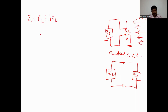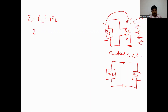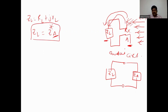According to the maximum power transfer theorem, the maximum power will be transferred from the antenna to the load when the load impedance is the complex conjugate of the antenna impedance. So the condition for maximum power transfer is: load impedance ZL equals the complex conjugate of the antenna impedance ZA.